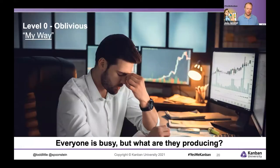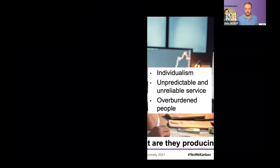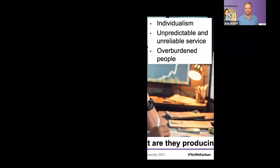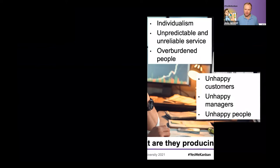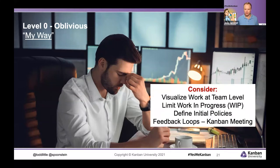When looking at maturity levels, at the lowest level — oblivious — you tend to find a 'my way' mindset. Everyone's busy but no one knows what they're actually working on. This results in individuals having ownership that's only theirs, unpredictable and unreliable service, and people who are typically overburdened — leading to unhappy customers and unhappy managers. Solutions include visualizing work at the team level, limiting work in progress, defining some policies to get started, and having conversations through feedback groups like the Kanban meeting.